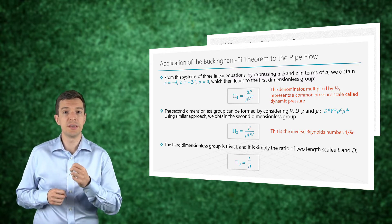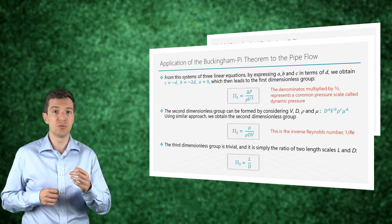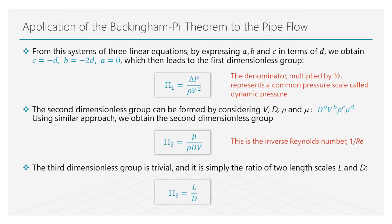Substituting the results into the exponent of the physical variables for the dimensionless parameter, and setting d equal to 1, we obtain the first dimensionless parameter, that is the ratio of the pressure drop to twice the dynamic pressure term.